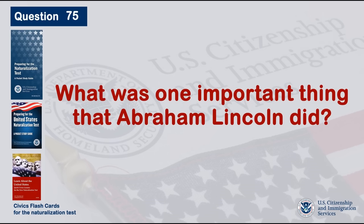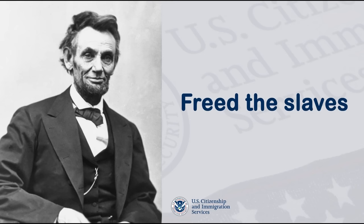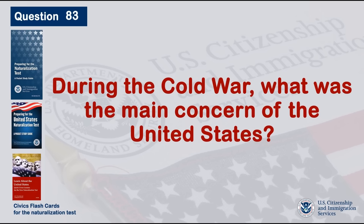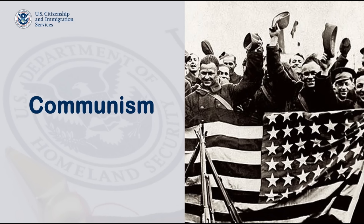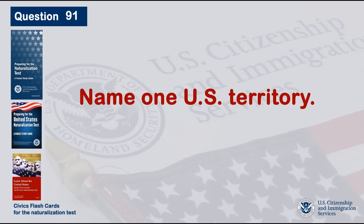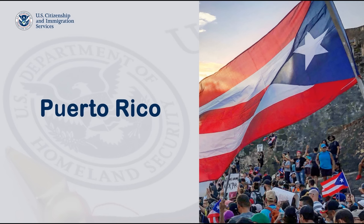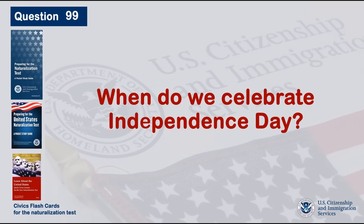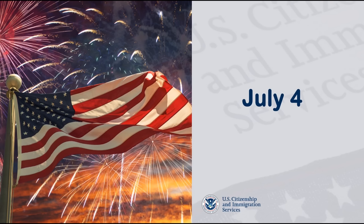What was one important thing that Abraham Lincoln did? Freed the slaves. During the Cold War, what was the main concern of the United States? Communism. Name one U.S. territory. Puerto Rico. When do we celebrate Independence Day? July 4th.